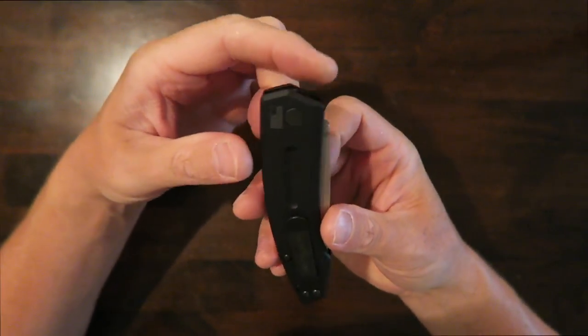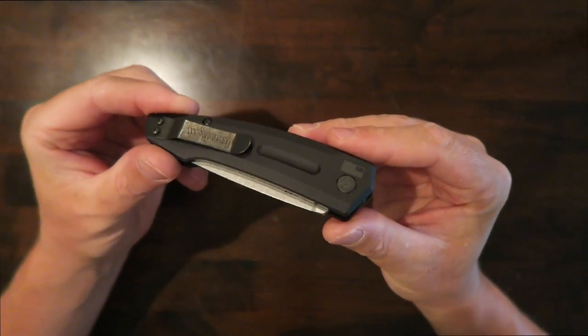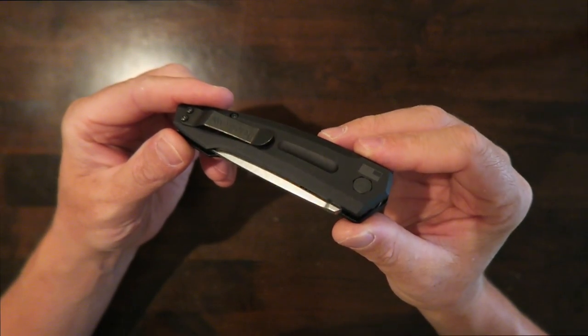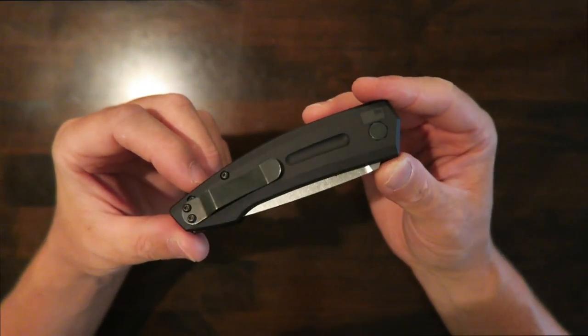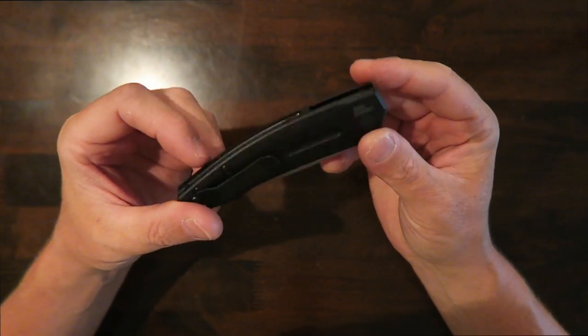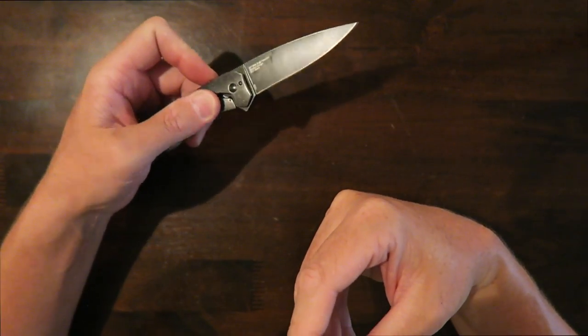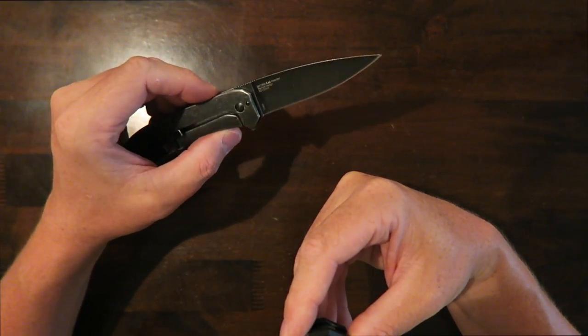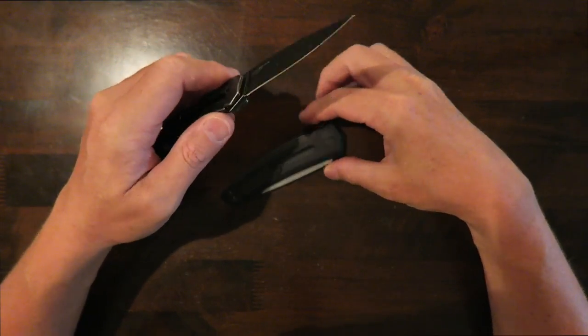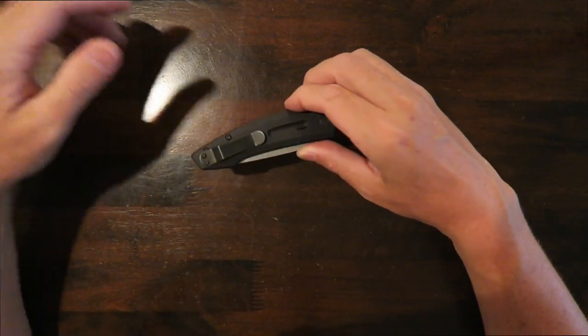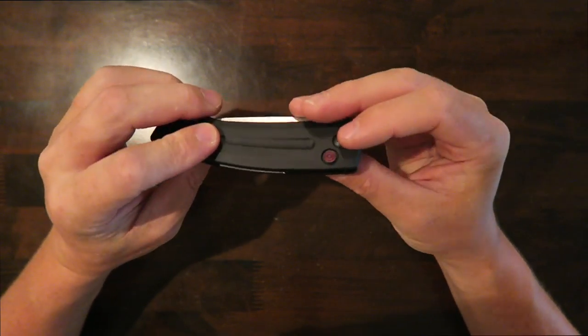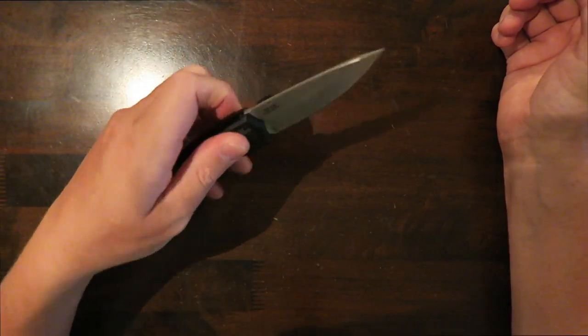So last but certainly not least this is the most expensive of the bunch. This is the Launch 2. This one will run you nearly $100. This is a fully automatic knife. So whereas these are sort of what I call semi-automatic with that spring or that speed safe assisted flipper there. They do fly out very quickly. This one is a push button automatic and it flies out of there.